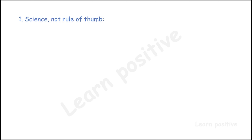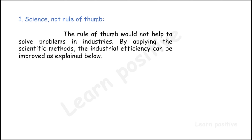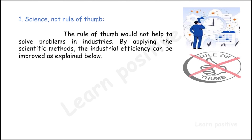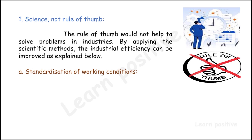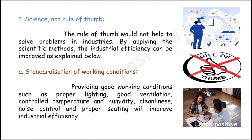We will see each one in detail. The first point is science, not the rule of thumb. Each and every problem can be solved by using the scientific method, not the commanding method. The rule of thumb would not help to solve problems in industry. By applying the scientific method, industry efficiency can be improved. The first sub-point is standardization of working conditions — providing good working conditions such as proper lighting, good ventilation, controlled temperature and humidity, cleanliness, noise control, and proper seating will improve industry efficiency.